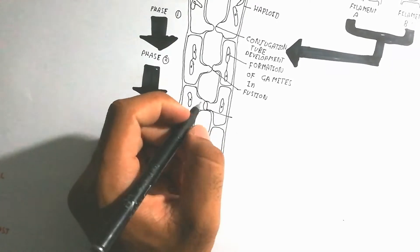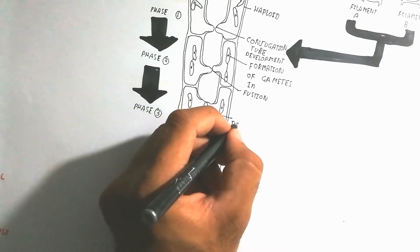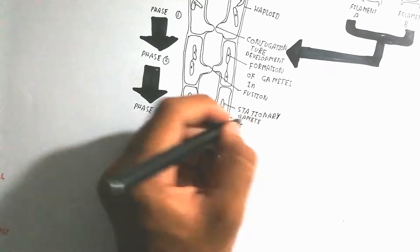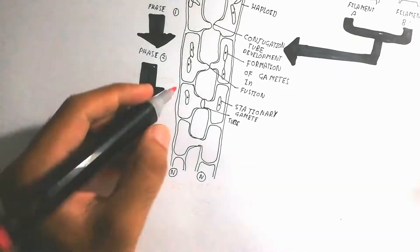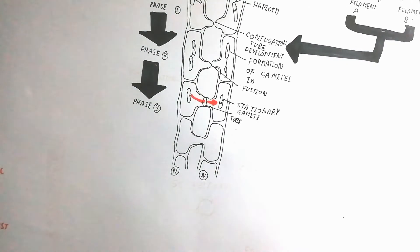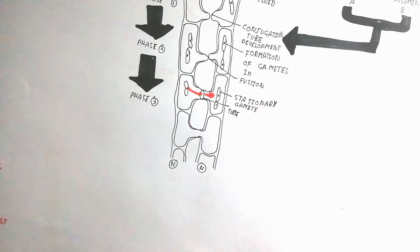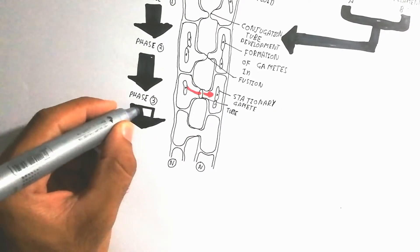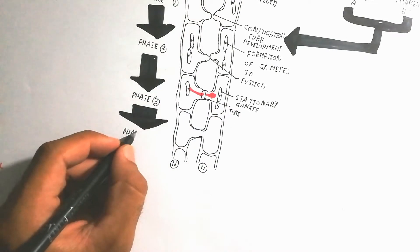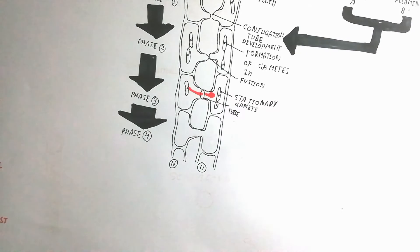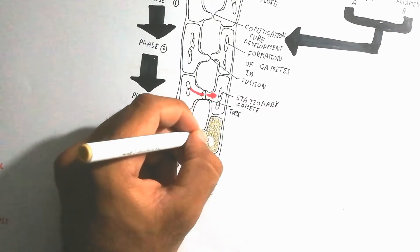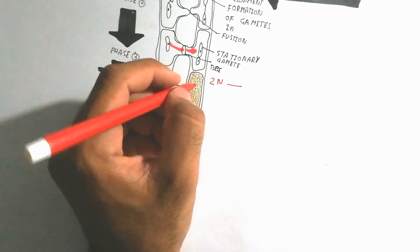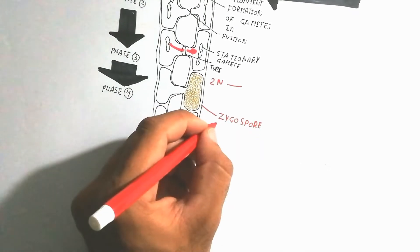One gamete remains stationary and the other is motile. The motile gamete moves from one cell to another cell. The two gametes then unite together. The union of two gametes converts the haploid (1n) chromosome number into a double chromosome number (2n), which is diploid. In phase four, the zygospore is produced, and the zygospore is 2n.